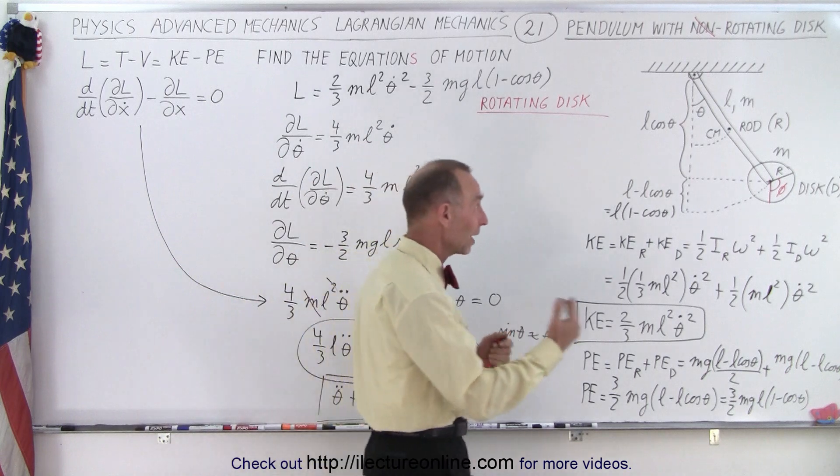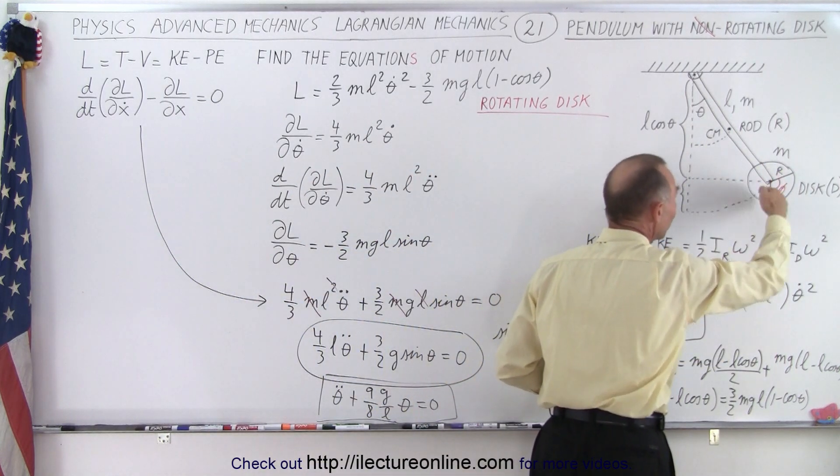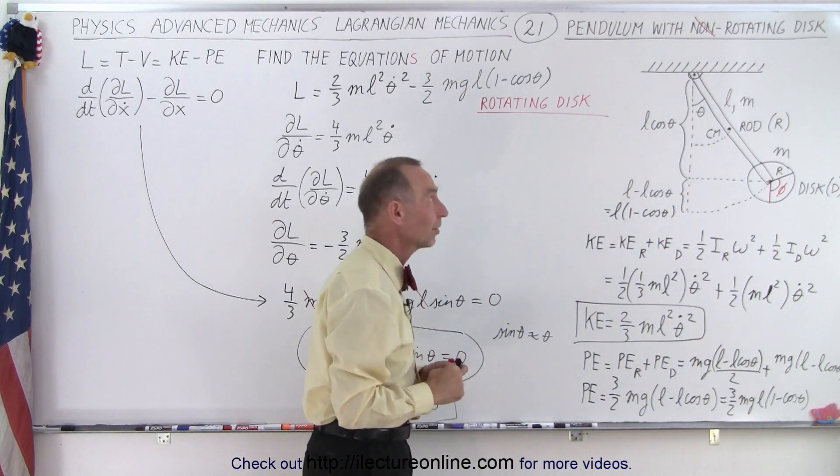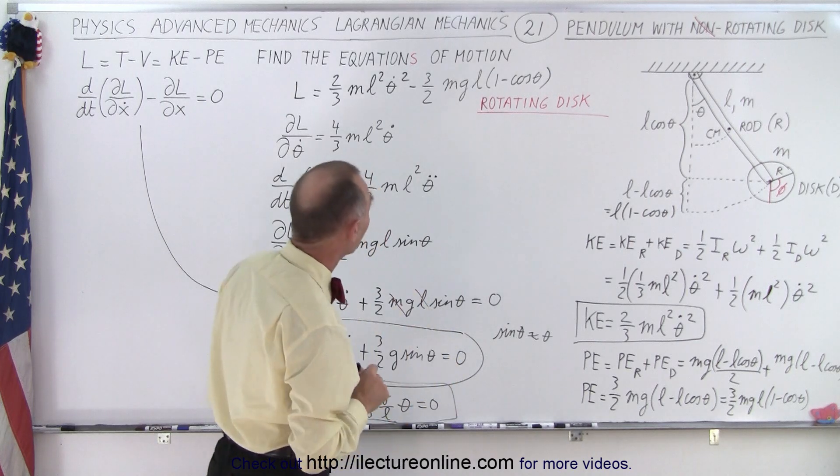We have the same pendulum, we have a rod, we have a solid disc, but now the disc is also allowed to rotate about its own axis. And now we need to find two equations of motion.